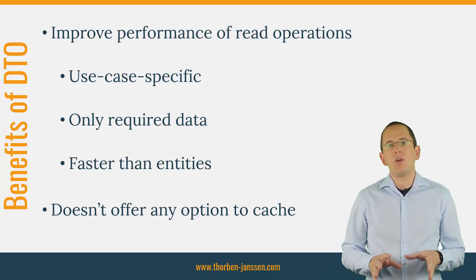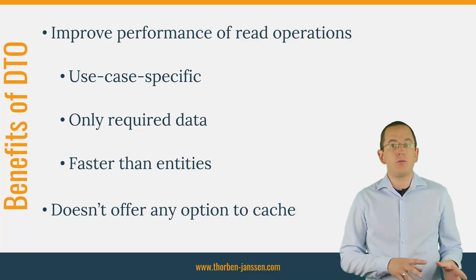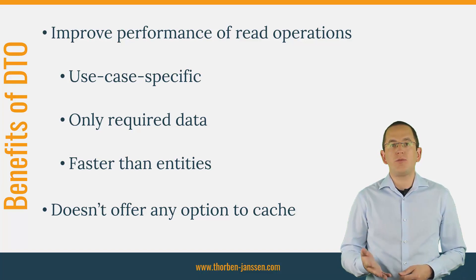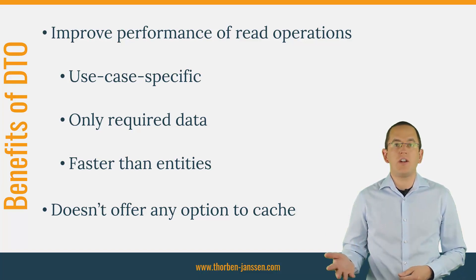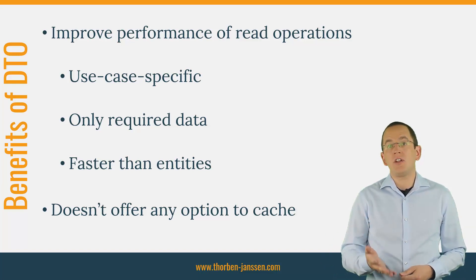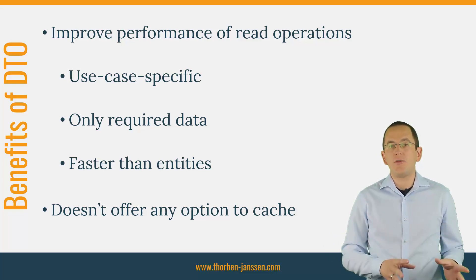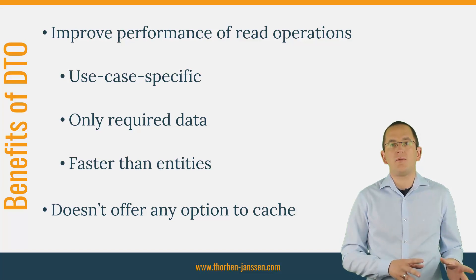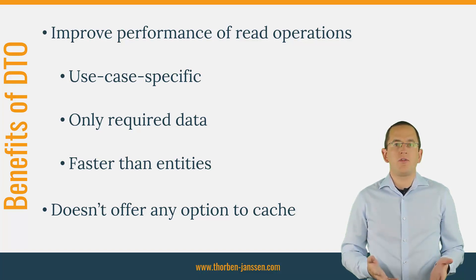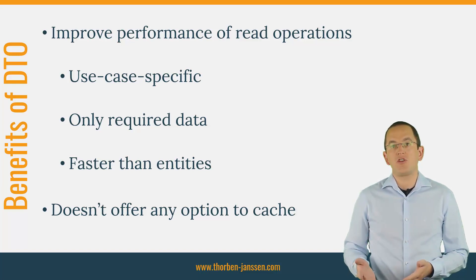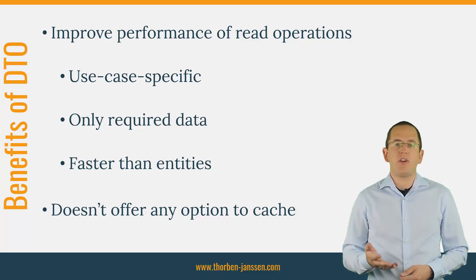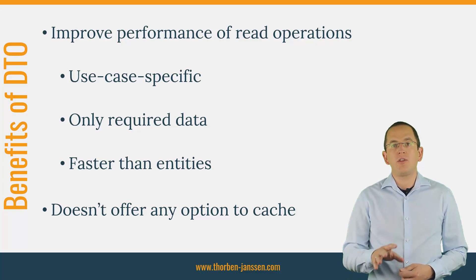And that's not the only reason why you should use them for read operations. As I showed in one of my previous articles, which you will find in the description, even if your DTO projection contains the same information as your entity, the DTO projection is significantly faster. The only downside of queries that return DTO projections is that the JPA specification doesn't offer any option to cache them. But you can use Hibernate's proprietary query cache for it.